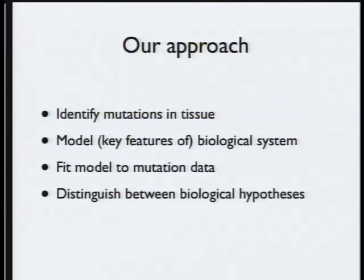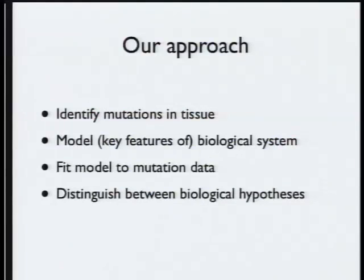There are really four things to do. The first is to decide what sort of mutations you're going to measure. The second is to model the key features of the biological system — the models will be things that look like evolutionary trees. Then there's a statistical part which tries to connect the model to the mutation data. These mutation data are a very indirect representation of what's going on in the tumor, so we have to connect the statistics back to the biology, and hopefully that will allow us to distinguish between biological hypotheses — do we get cancer stem cells or not?